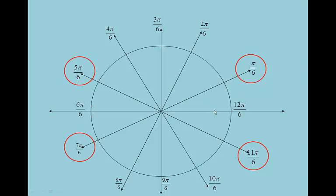The π/6 angles — there are a lot of them. Remember, π is 180 degrees, so π/6 is 30 degrees. The red ones are really the π/6 angles; the others are just placeholders. We go: π/6, 2π/6, 3π/6, 4π/6, 5π/6, 6π/6, 7π/6, 8π/6, 9π/6, 10π/6, 11π/6, and back to 2π — 12π/6.